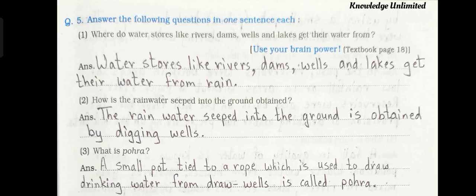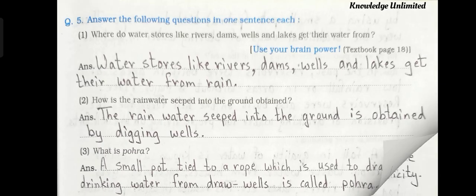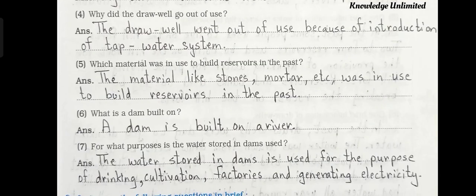Answer: the rainwater seeped into the ground is obtained by digging wells. Question number three: what is pora? Answer: a small pot tied to a rope which is used to draw drinking water from drawwells is called pora.